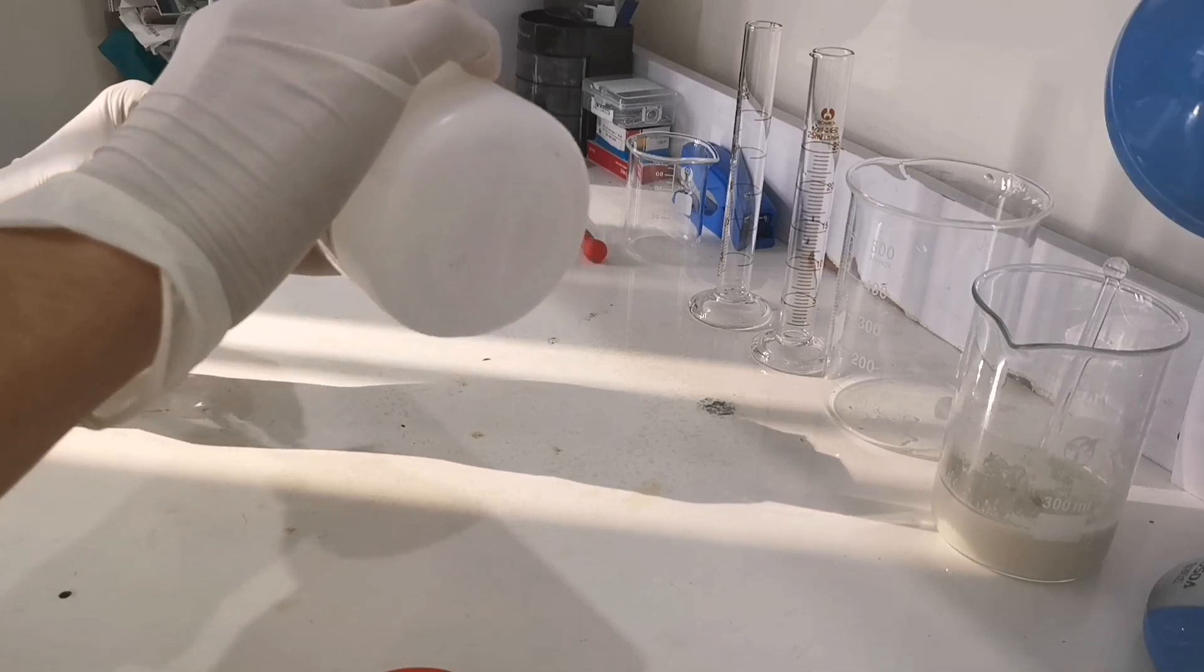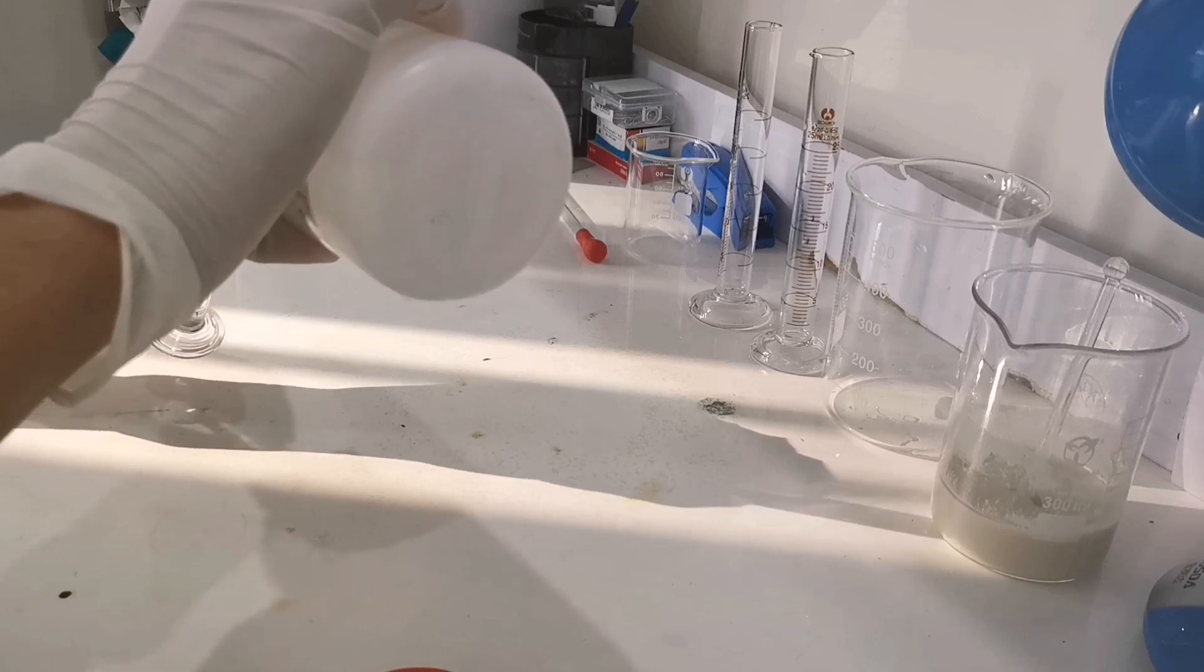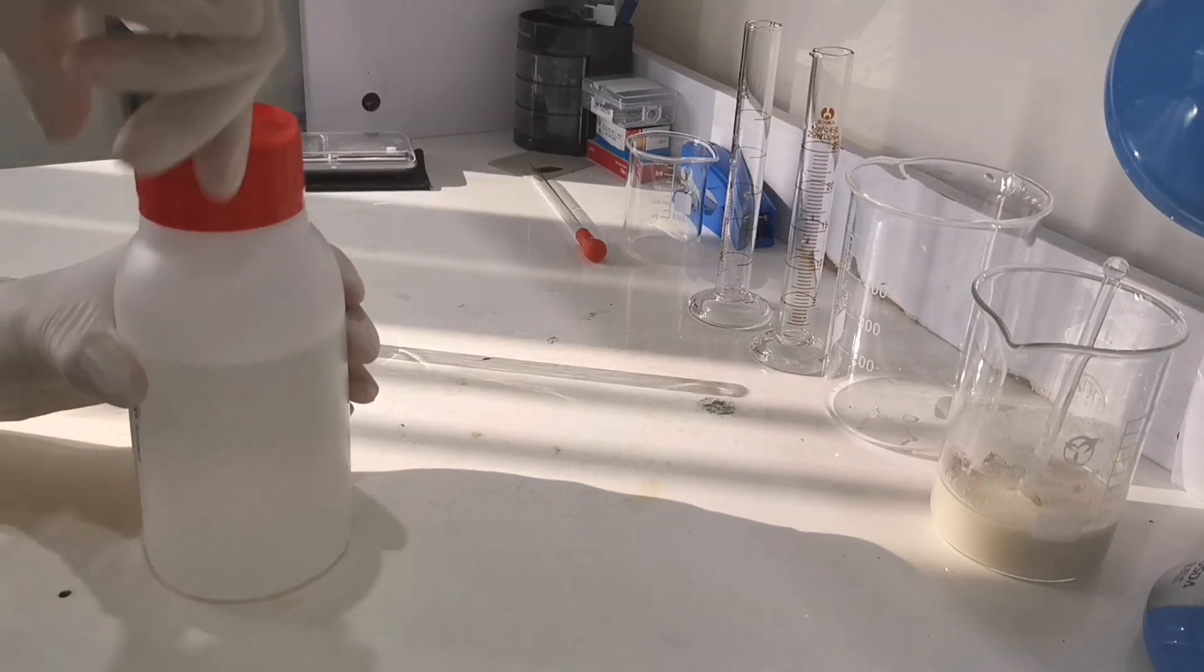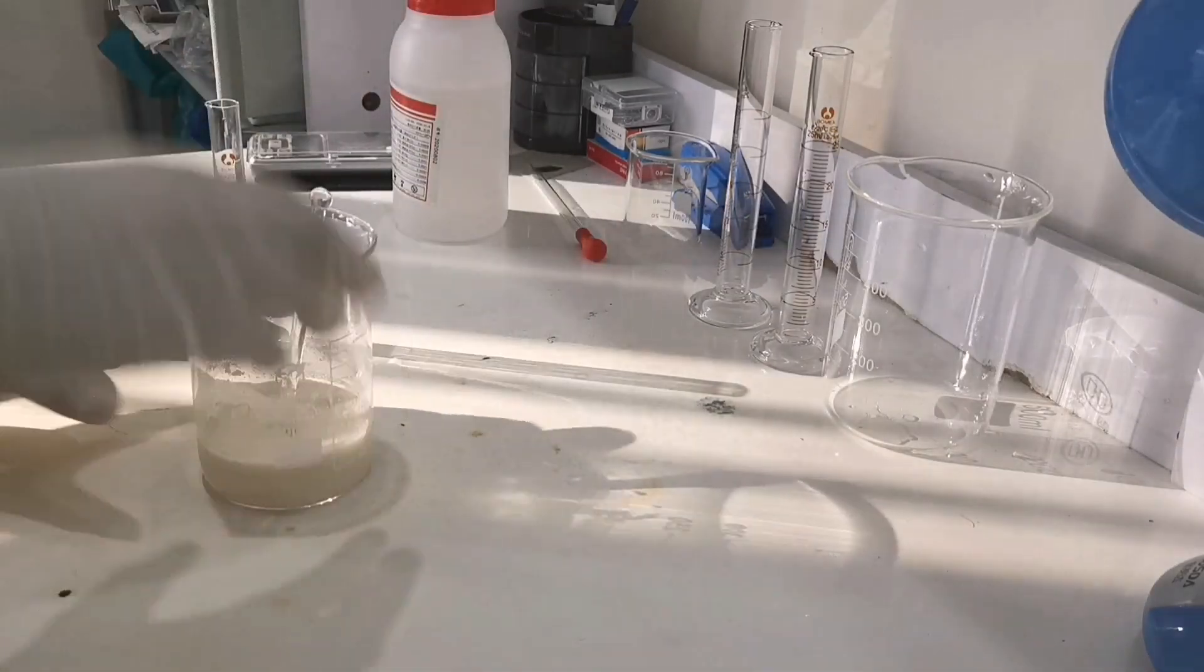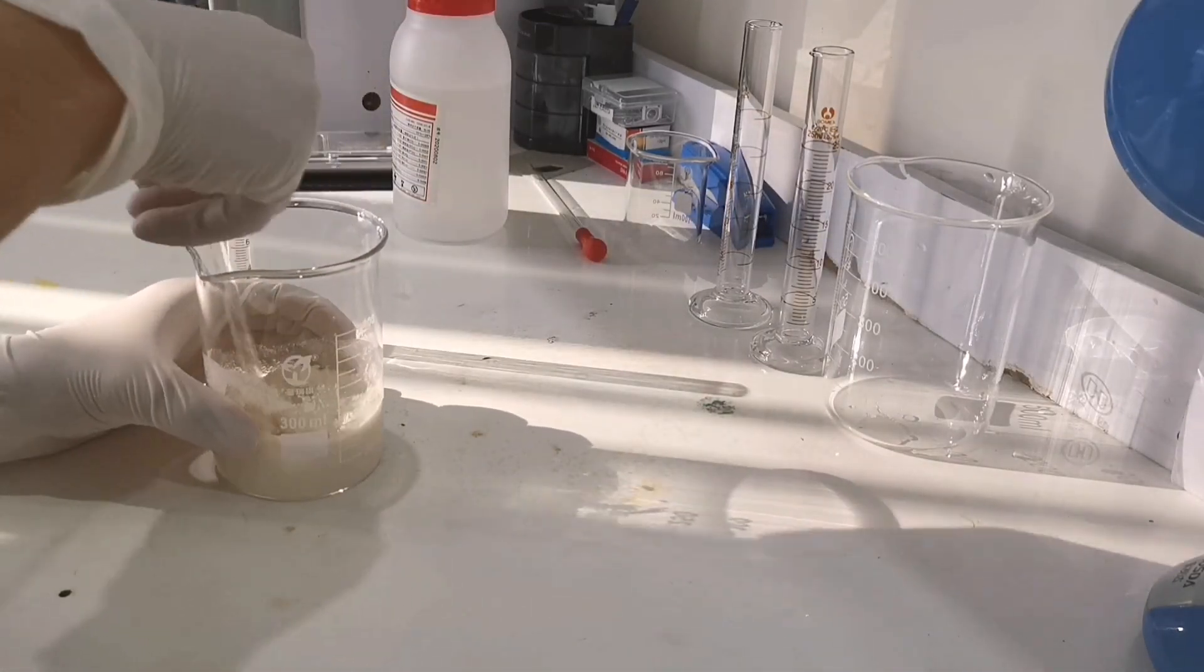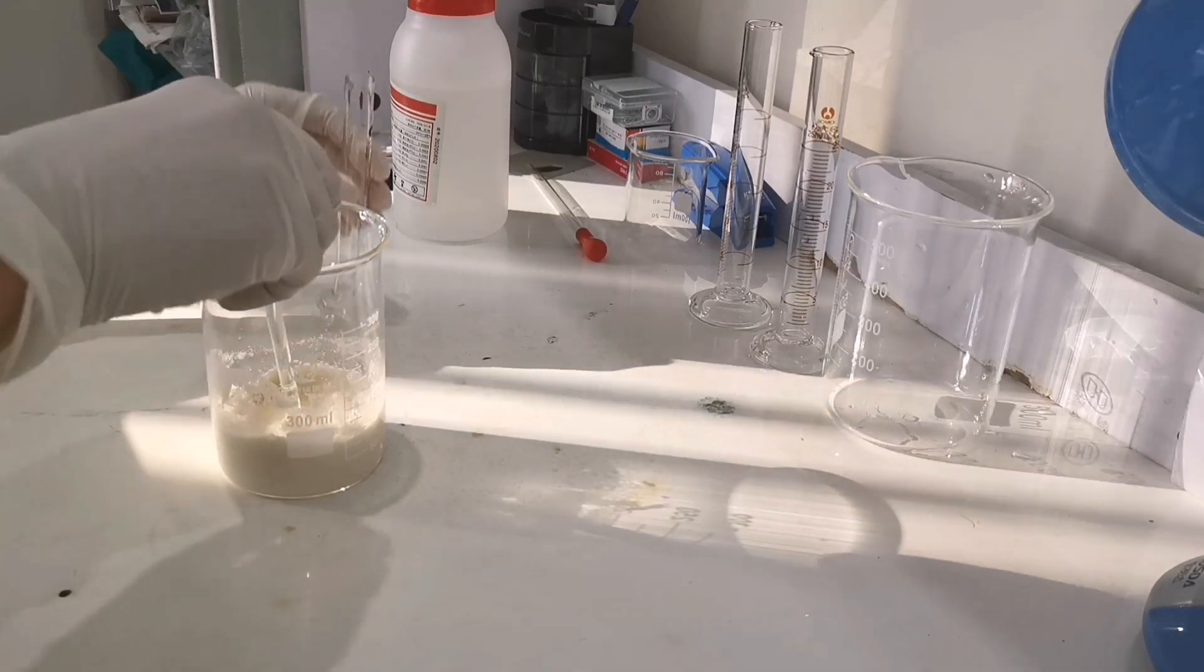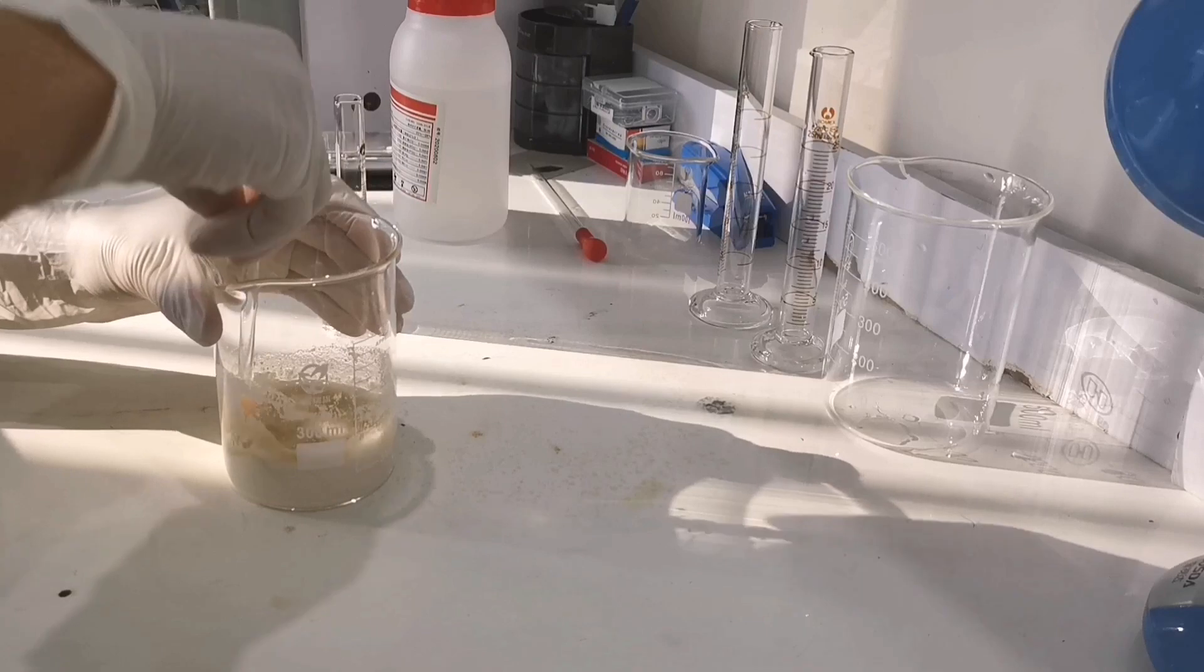Now we measure out 2.5 mls of 25% ammonia into a measuring cylinder. Closing the bottle of ammonia and now we are ready to add ammonia into the casein. We give casein a bit more stirring and slowly add the ammonia into the beaker. The moment we add the ammonia, it's very important to stir it immediately.